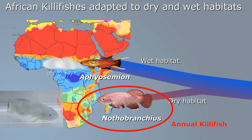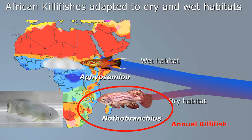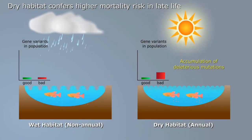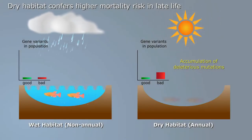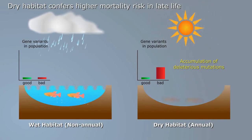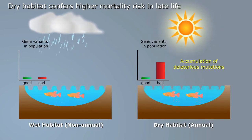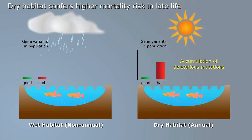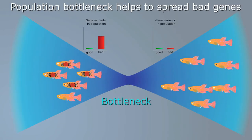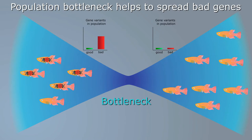Killifish from dry regions are called annual killifish, and they tend to be short-lived. In annual killifish, there is a strong selection to reproduce rapidly, but the selection to live longer than the duration of the rainy season is weak. Dry habitats lead to highly fragmented populations, reducing population size of annual fish and causing mutant genes to accumulate.